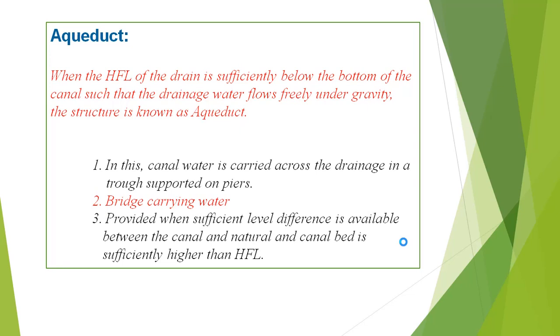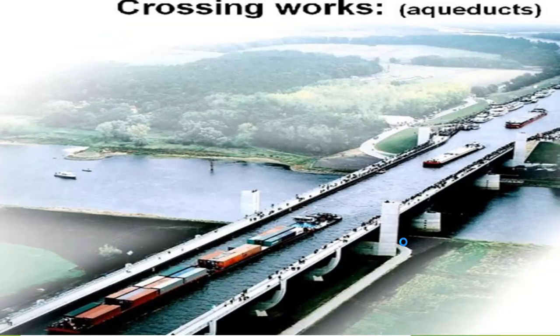An aqueduct is provided when sufficient level difference is available between the canal and the natural drain, and the canal bed is sufficiently higher than the high flood level. These are the crossing works — aqueducts — where you will see the drains and the river.